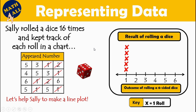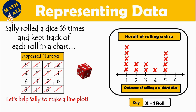Now how many times did number 2 appear? Let's count: 1, 2 — number 2 appeared just 2 times, so we show 1, 2. The next number 3: let's count from the chart — 1, 2 — just 2 times. Number 4 appeared just 1 time. Number 5: we have 1, 2, 3, 4 — number 5 appeared 4 times. Let's show on the line plot: 1, 2, 3, 4.